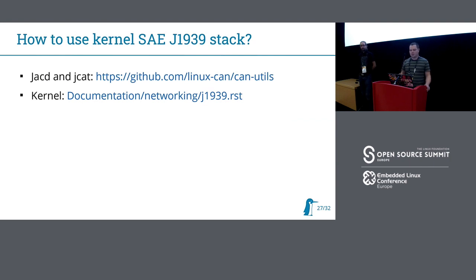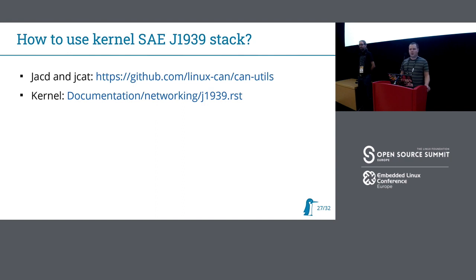If you want to try to play with the kernel stack, you can already use some examples in canutils. For example, jacd is a daemon for J1939 address claiming — it's really straightforward, a simple daemon, but it's ready for use. And jcat was used for transport and extended transport protocol testing, similar to netcat. You get jcat on both sides, send data from one unit over CAN with the transport protocol, and gather it on the other side — you can just pipe a file through it.